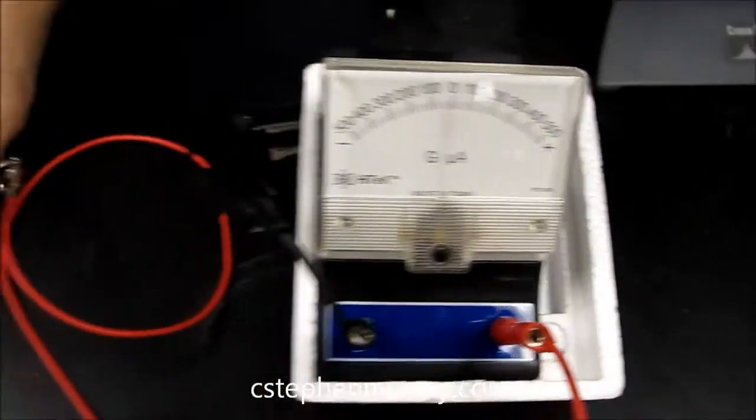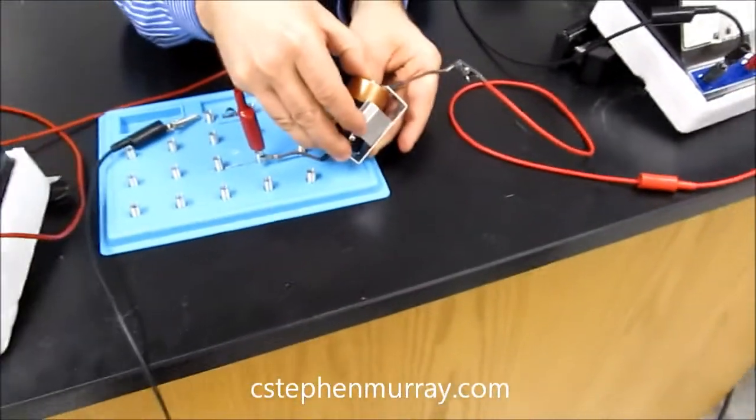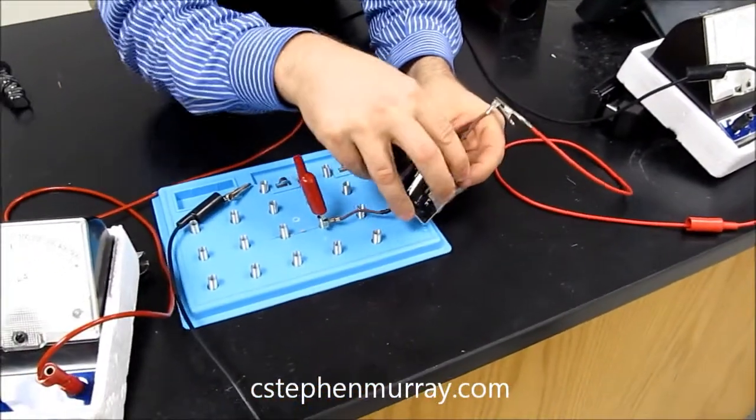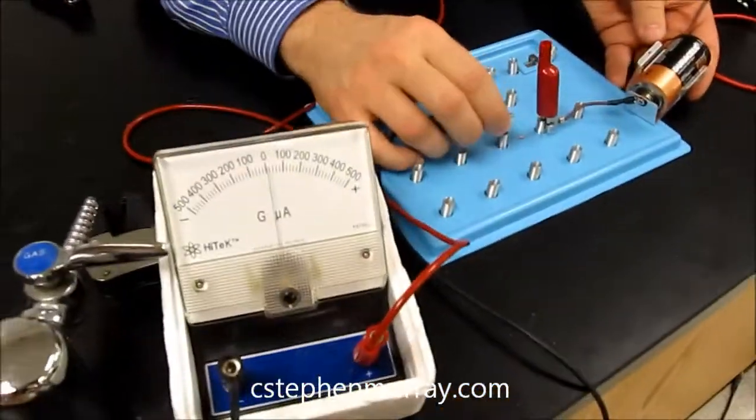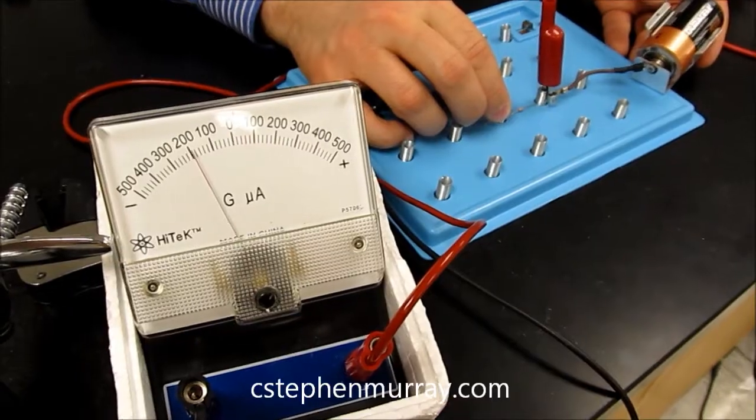Now let's switch the battery around so that the positive current flow is flowing into the negative. So, watching the galvanometer, it reads negative.